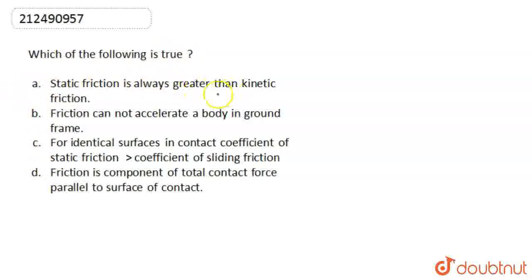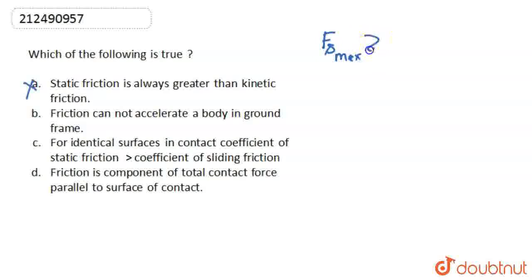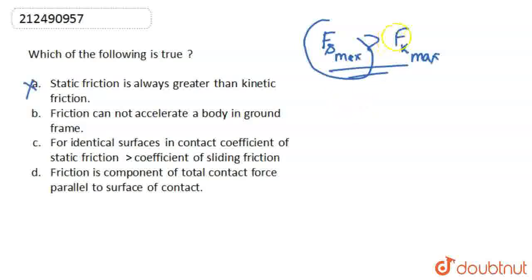The first option is: static friction is always greater than kinetic friction. This is an incorrect statement, because the value of static friction is not always greater than the value of kinetic friction. The relation between static friction and kinetic friction is such that the maximum limit of static friction force is greater than the maximum limit of kinetic friction force. But this does not mean that static friction is always greater than kinetic friction, because the value of static friction varies between 0 and fs max.